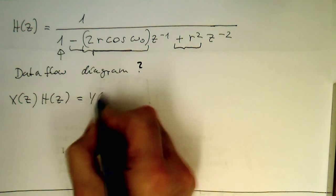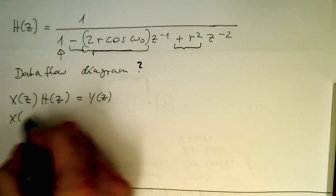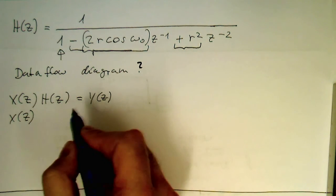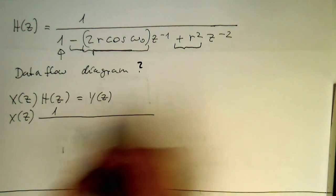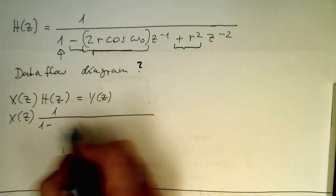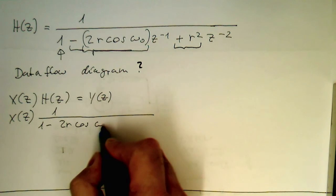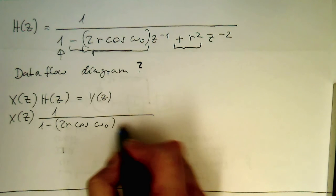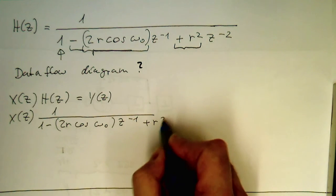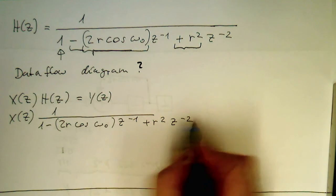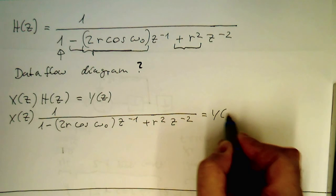So the idea is that we're actually multiplying the x of z against the h of z, and we're getting our y of z. So this means here in this case, our x of z is multiplied by 1 over, and then we've got here the 1 minus 2r cosine omega 0, z to minus 1 plus r square z to minus 2, and this is y of z.